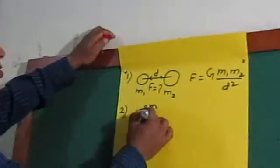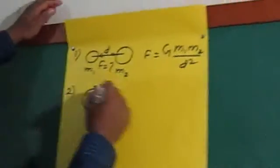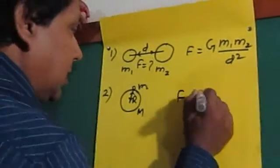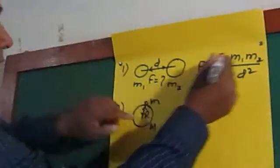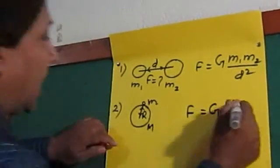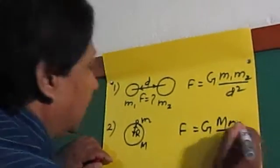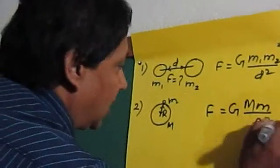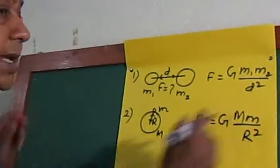And the distance between them is the radius of the big heavenly body. Then the gravitational force between these two bodies is calculated by using this equation: F = G*M*m/R². These two equations are basically the same.